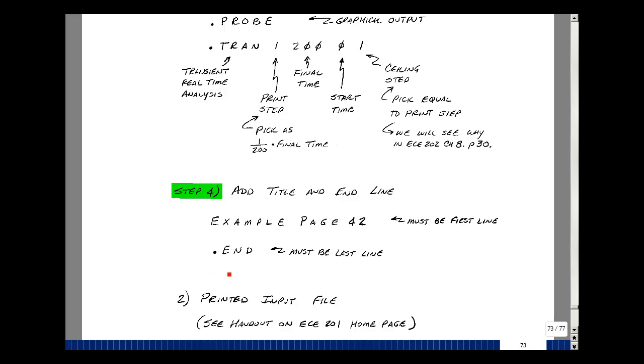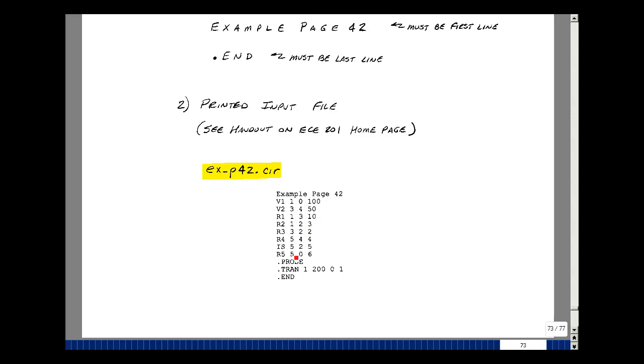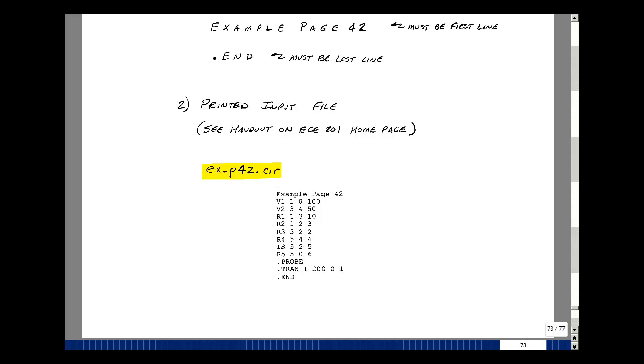If you look at my home page on the ECE 201 button, there's a handout for how to run PSPICE on the computers at Michigan State University. Listed here is my typed file from the commands on the previous page. I call this example_page42.cir and put this in a directory where I'm running PSPICE. The default extension is .cir and it'll be looking for those files.